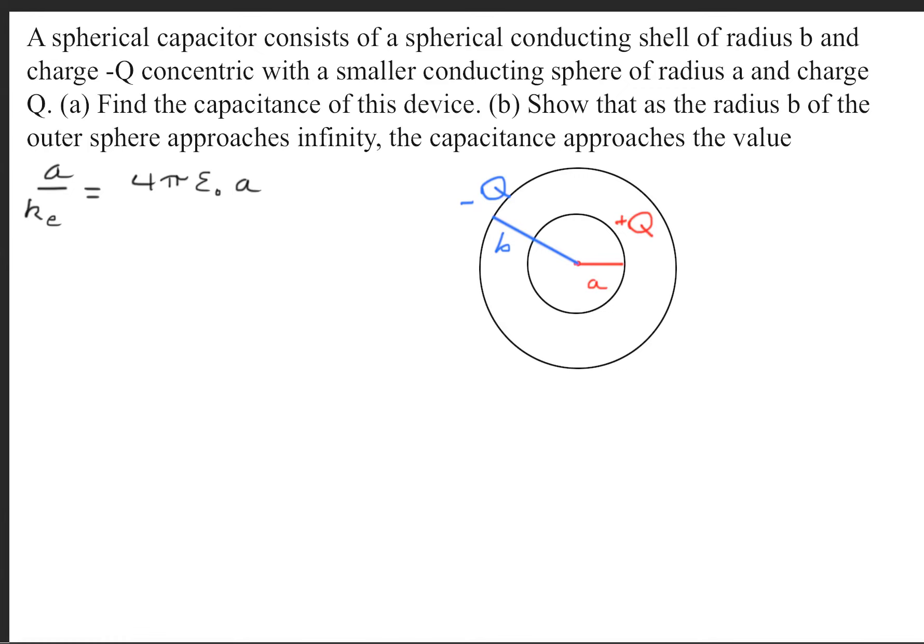Part A is asking to find the capacitance of this device. When doing capacitance, we need two variables using the formula Q = C·ΔV.